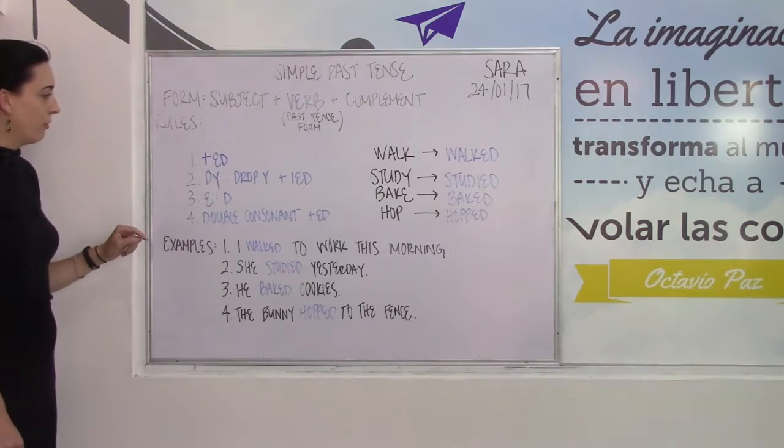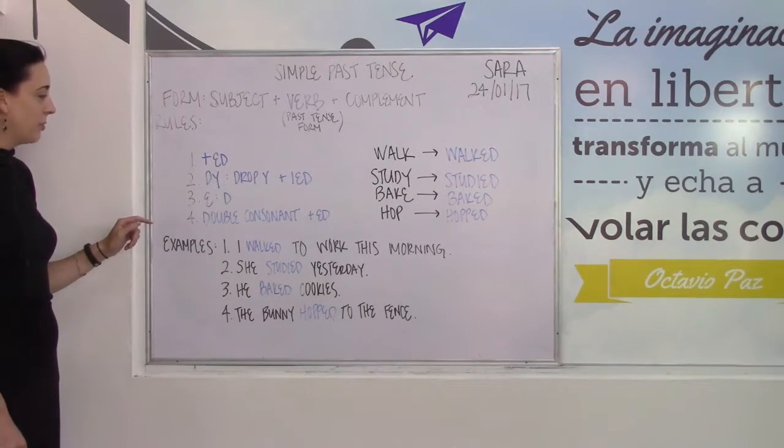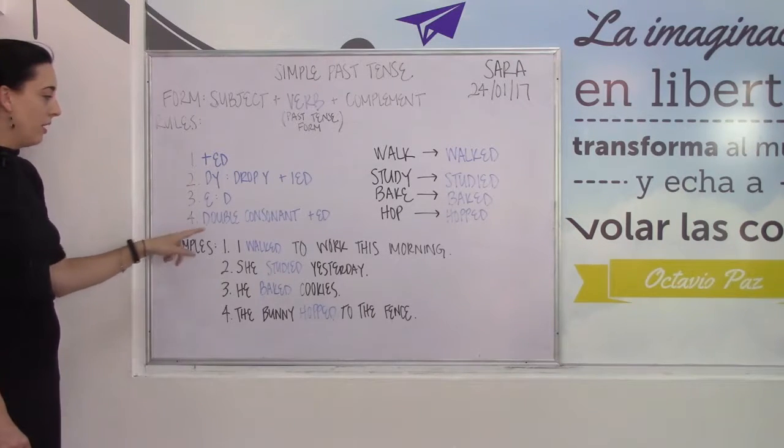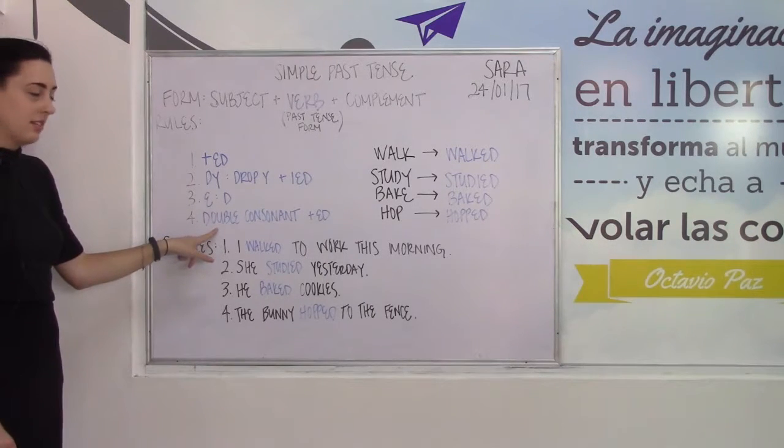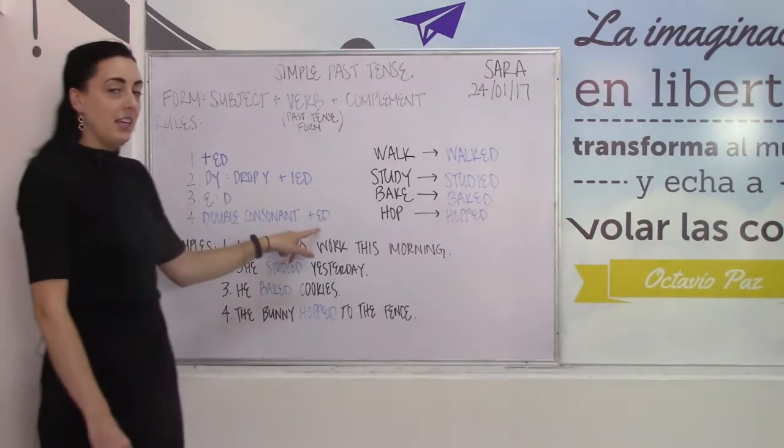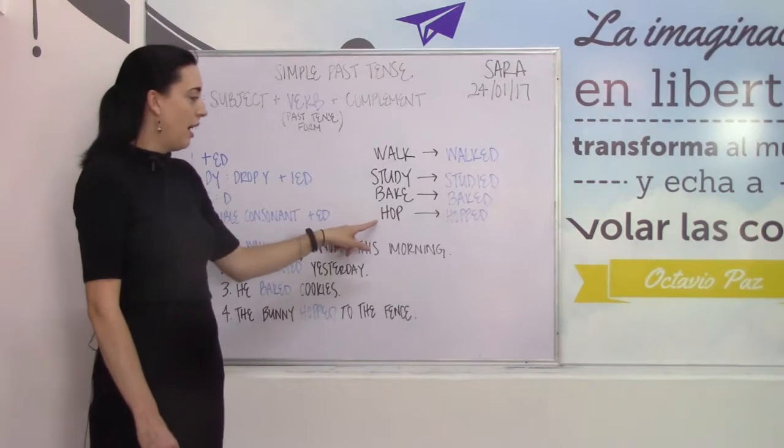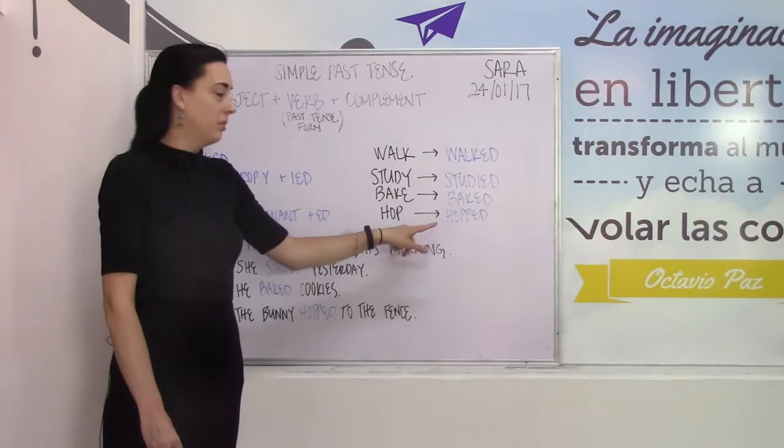Our fourth rule is for verbs ending in a consonant. We will double the consonant and add ED. Hop will get turned into hopped.